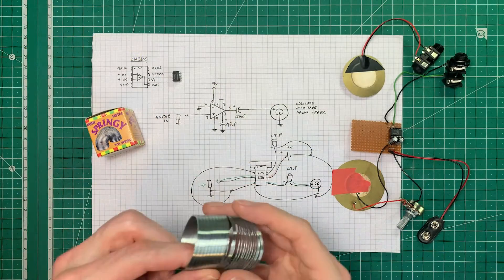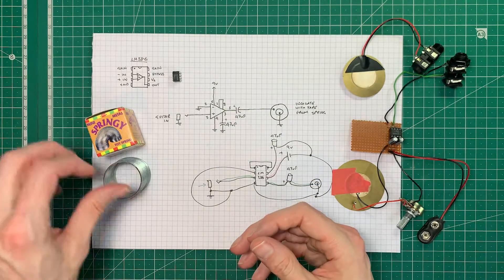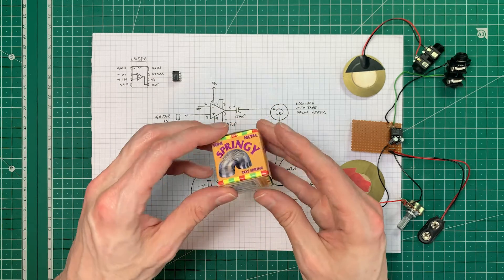So if you want to give my experiment a go, you're going to need one of these which is a springy or a slinky. I'm using a mini one that looks like this and they're readily available in most toy shops and of course online.